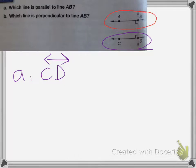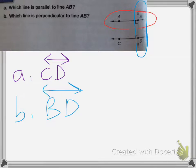And the next one is which line is perpendicular to AB. And perpendicular means that it meets at a right angle. So the line that meets at a right angle is line BD. So BD would be line BD is your answer.